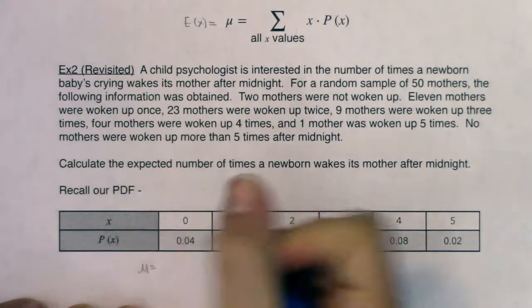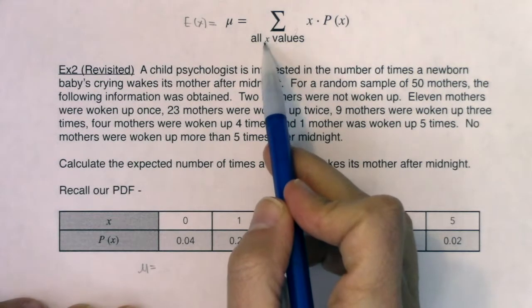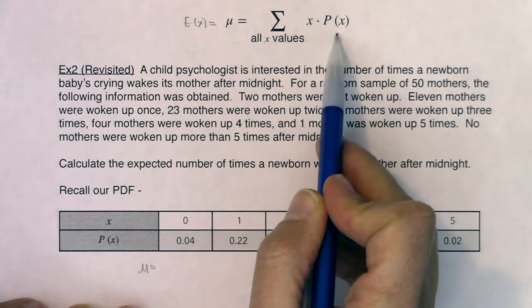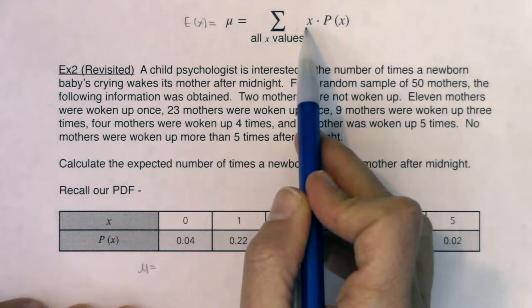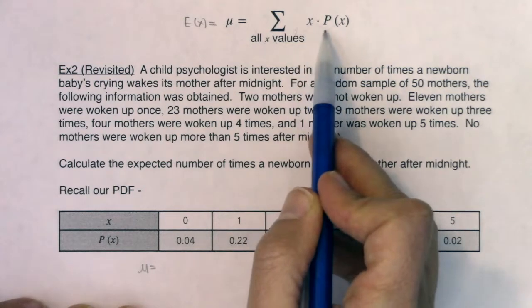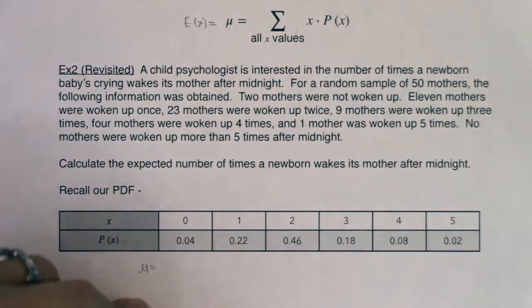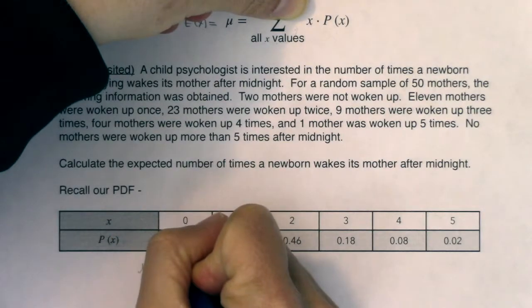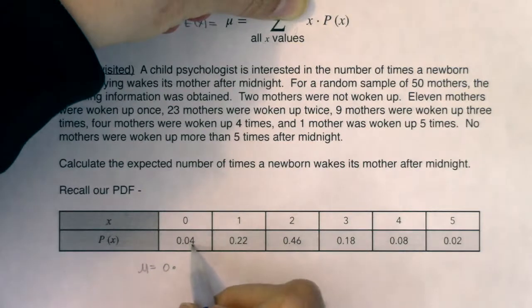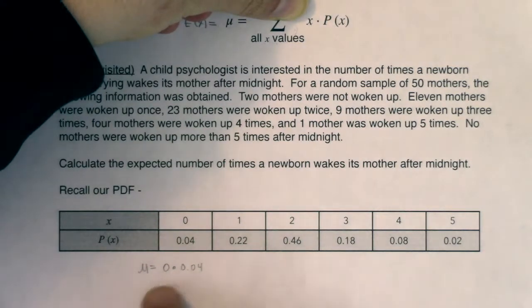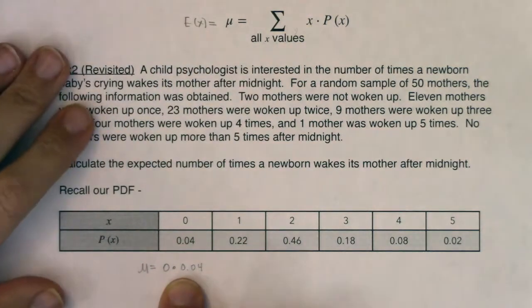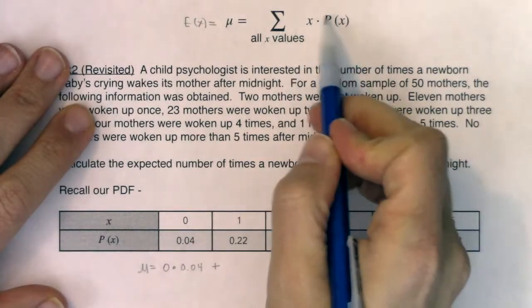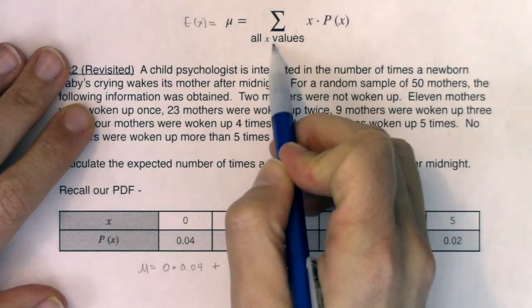We can kind of eyeball the average a little bit. If I look at these probabilities, there's a lot of weight right here - 22% of your data here and 46% of your data here. I'm feeling like the mean is somewhere in that area. But let's use this formula to figure it out.